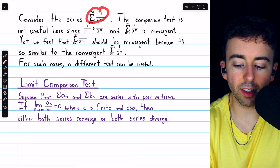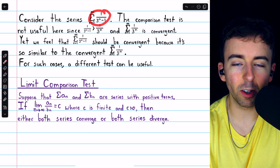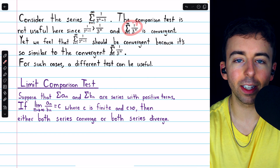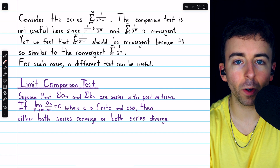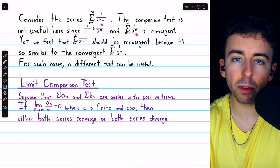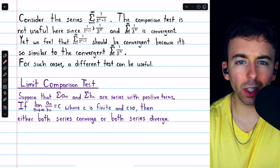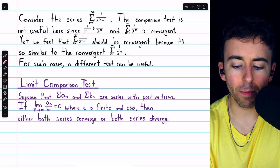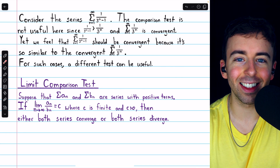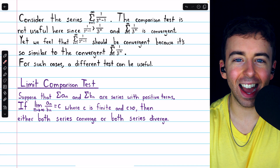You can see with the series we were thinking about before, even though the terms of our series are a little bit bigger than those of the familiar convergent geometric series, if we were to divide these terms by each other and let n go to infinity, the limit would surely be 1, because the minus 1 in the denominator is really not doing anything as n gets very large. That's the idea.